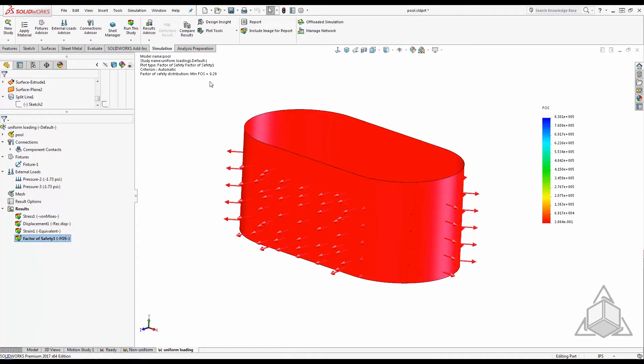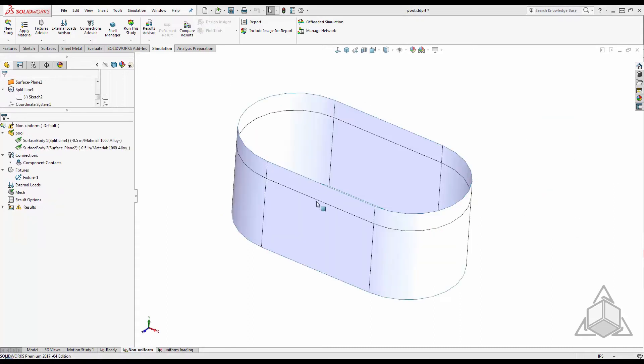But just wait a second, hydrostatic pressure varies with depth. There's not 1.73 psi at the highest point on the water level. In fact, the pressure there is almost zero, which is good since this is the least supported area of my design.